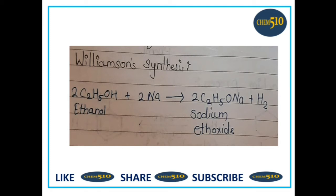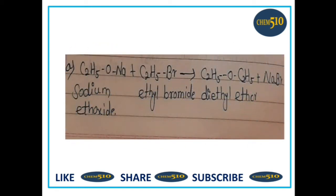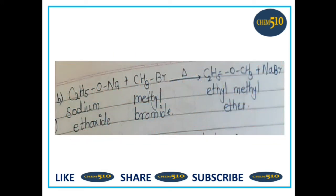Then Williamson synthesis. Williamson synthesis is an ether synthesis — an organic reaction forming an ether from an organic halide and a deprotonated alcohol. Williamson synthesis is an SN2 reaction. Here, deprotonation of ethanol forms sodium ethoxide. In one example, sodium ethoxide reacts with ethyl bromide to form diethyl ether and NaBr as a byproduct. In a second example (mixed ether), sodium ethoxide reacts with methyl bromide to form ethyl methyl ether and NaBr as a byproduct.